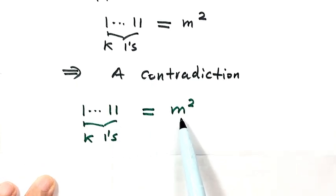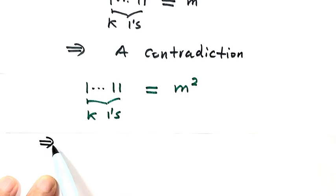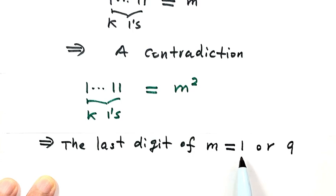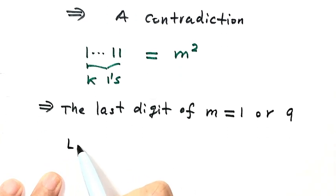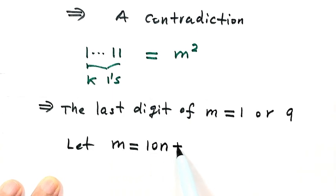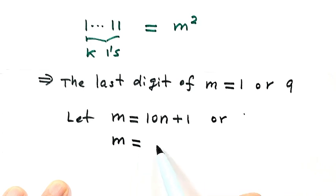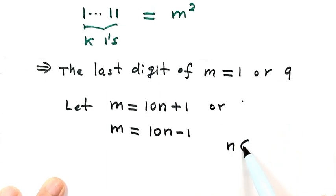Because the last digit of the number is 1, the last digit of m must be either 1 or 9, since 1 squared is 1 and 9 squared is 81, whose last digit is also 1. So let's rewrite m. Let m equal 10n plus 1, so the last digit is 1 for this case. Here n is a natural number.